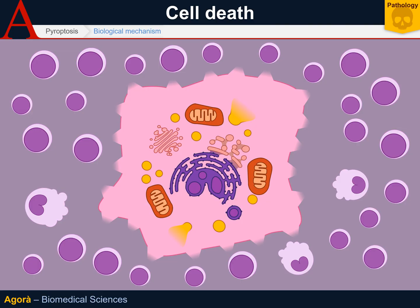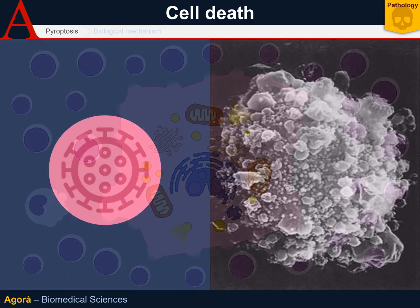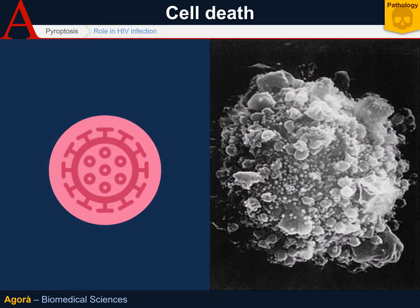It is believed that the role of pyroptosis is important in HIV infection. This virus seems to be capable of stimulating pyroptosis in infected lymphocytes to induce an enormous production of interleukin-1-beta and death — a phenomenon that will attract an incredibly large number of lymphocytes that the virus can easily infect by using a lure mechanism.